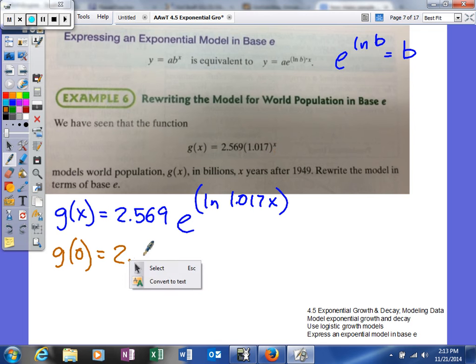So actually you can get it to 2.569. Now, remember, this is in billions. So it's important to realize what you're talking about. There's obviously not 2.569 people in the world in the year 1949. There's actually 2.569 billion.